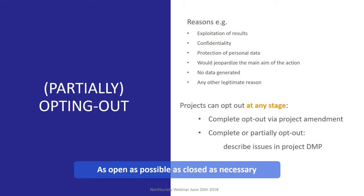There is a generous opting-out policy. The researcher has a lot of agency as a project or researcher to decide what you want to make open, how you want to make it open, and what needs to remain closed. You can completely or partially opt out. The main motto is: as open as possible and as closed as necessary.